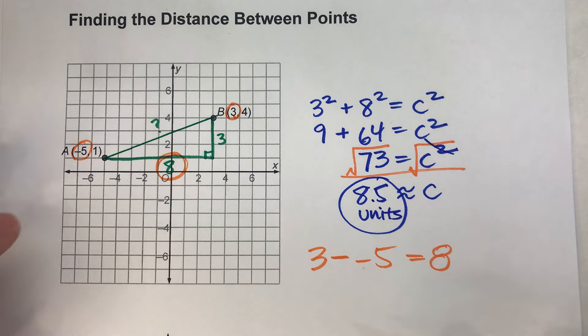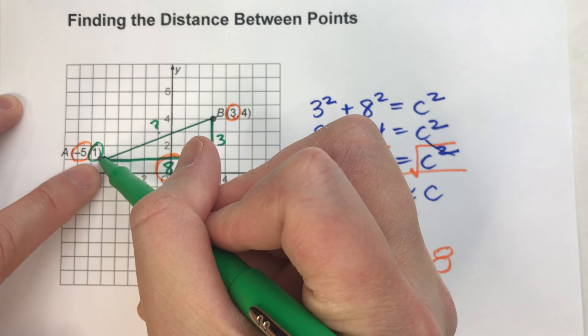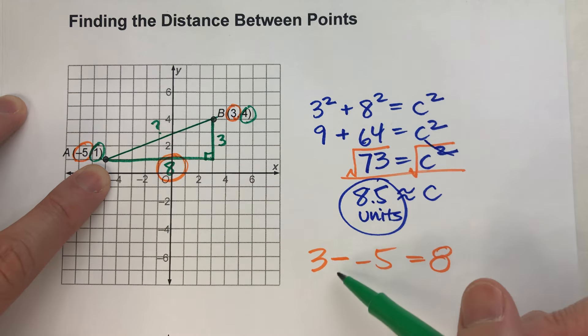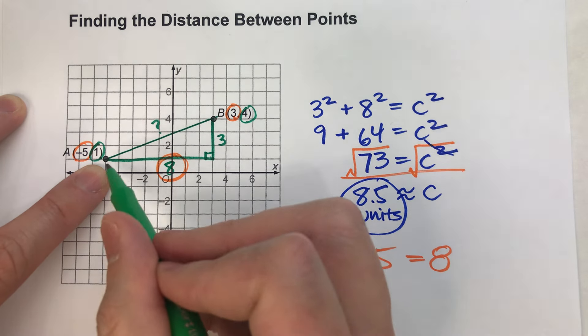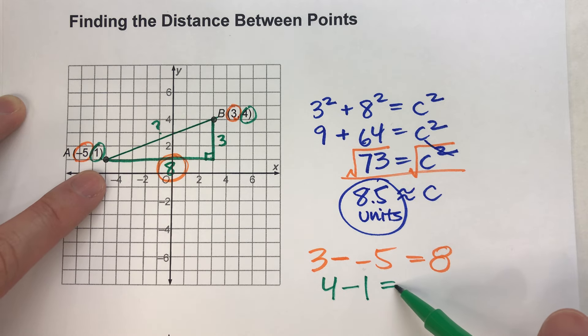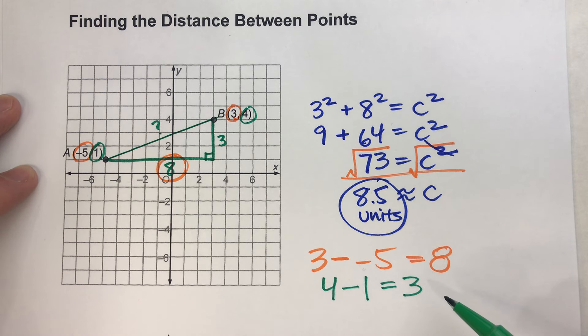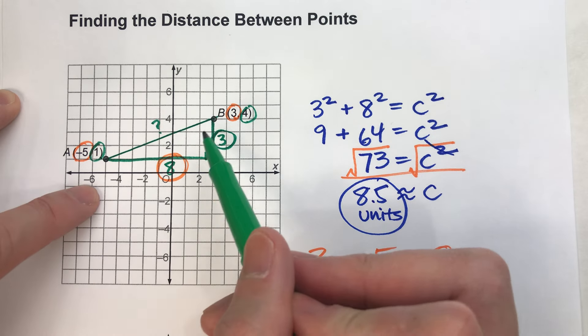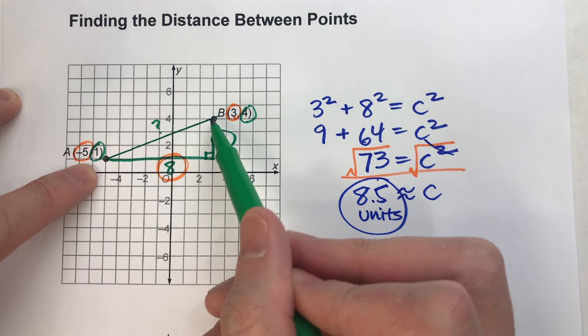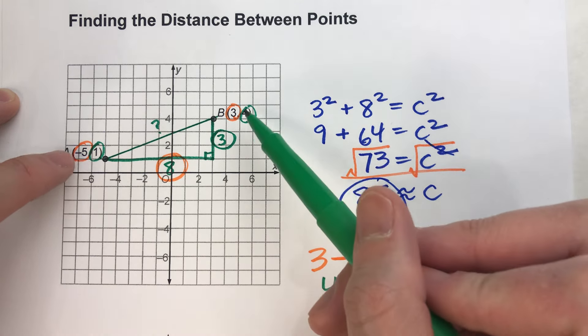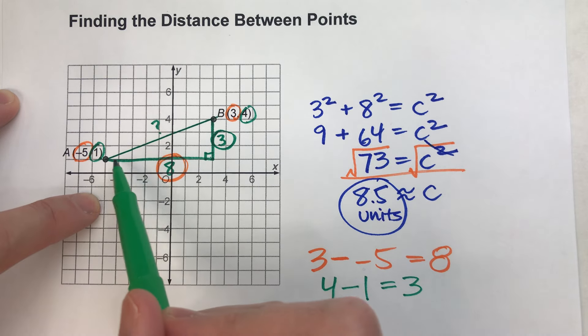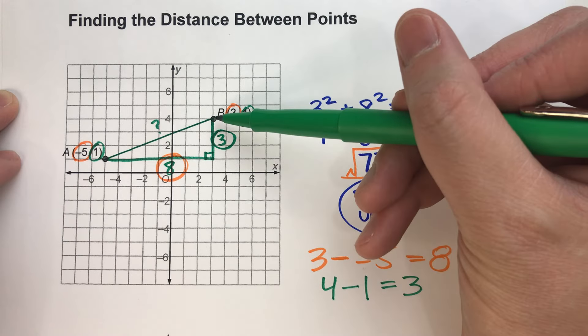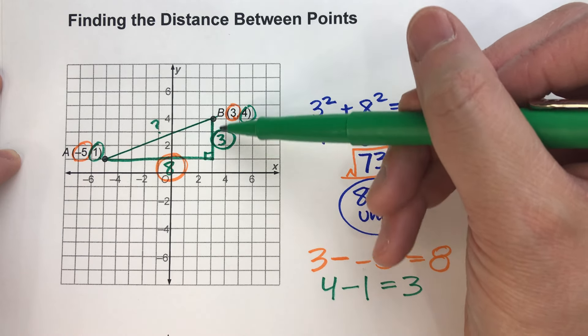Same thing with the y-coordinates. My y-coordinate here is 1. My y-coordinate here is 4. If I subtract them, 4 minus 1, I get 3. And look at my other leg of my right triangle. When you're trying to make this right triangle, subtract your x-coordinates, and that'll tell you the horizontal leg of your right triangle. Subtract your y-coordinates, that'll tell you the vertical leg of your right triangle.